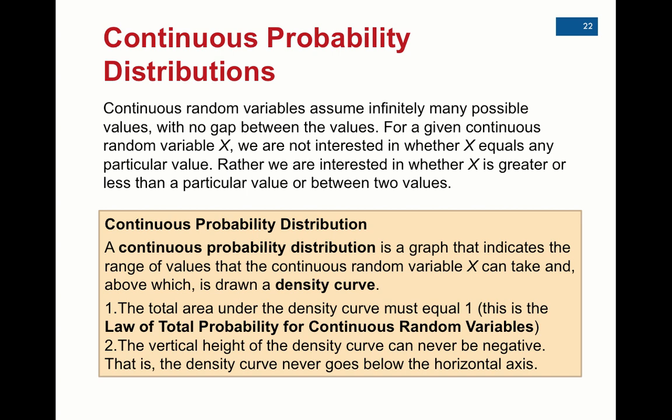So the other thing is, the vertical height of the density curve can never be negative. That's basically saying that the probability of any observation has to be between zero and one. It can't be less than zero.